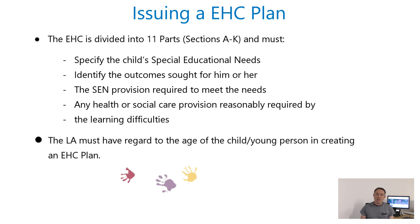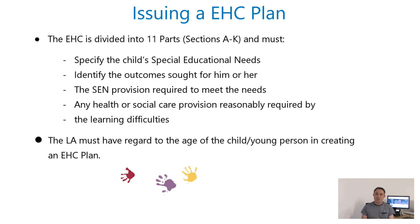When creating the plan, the local authority has to have regard to the child's age and the outcomes sought for them. They also have to have regard to the SEN code of practice when issuing the draft education, health and care plan. A good starting point for parents is to look at paragraph 9.61 of the code, which sets out in detail — with a table — how each of the sections should be drafted and what factors need to be considered.